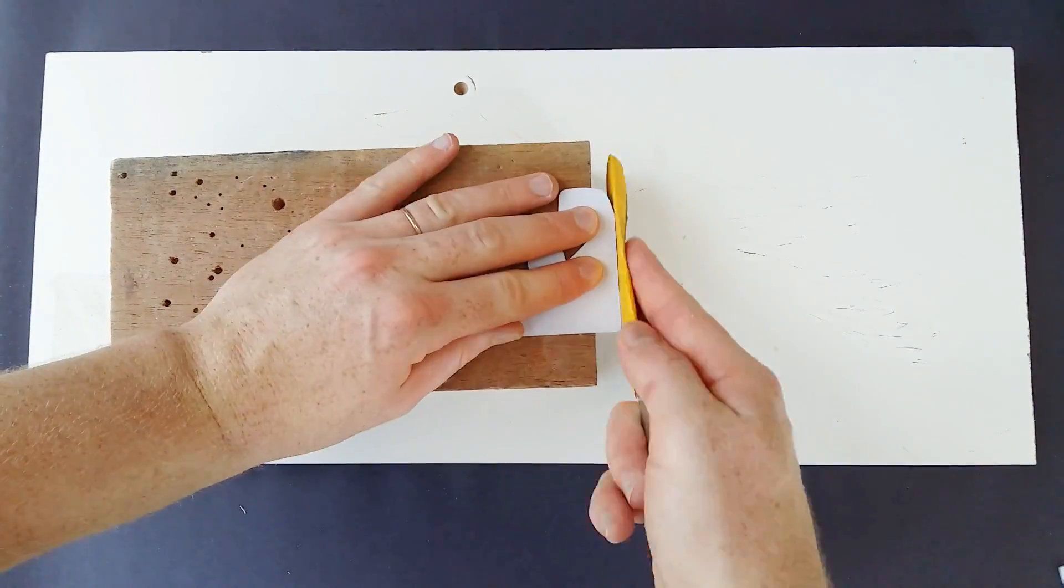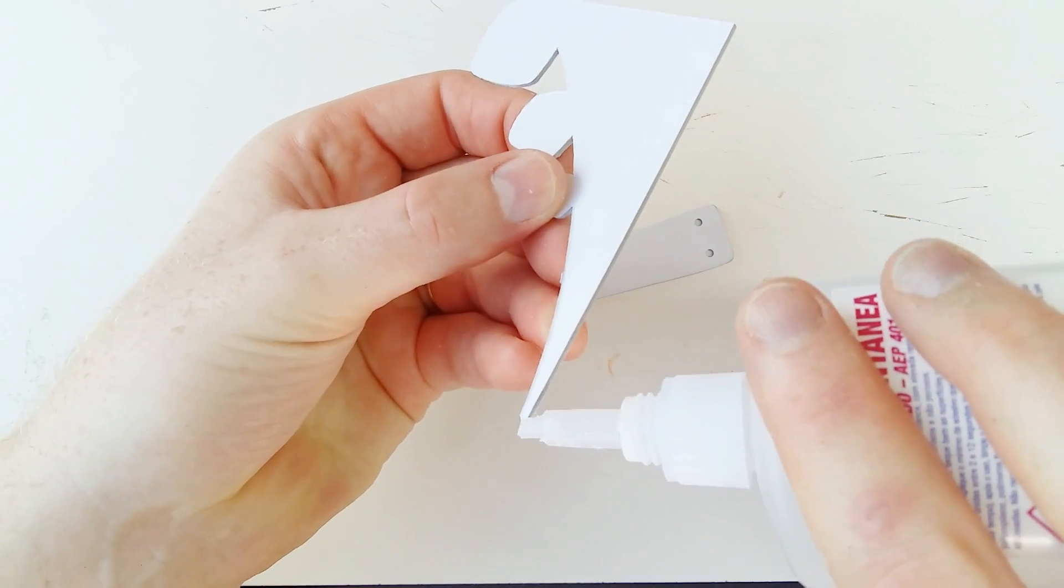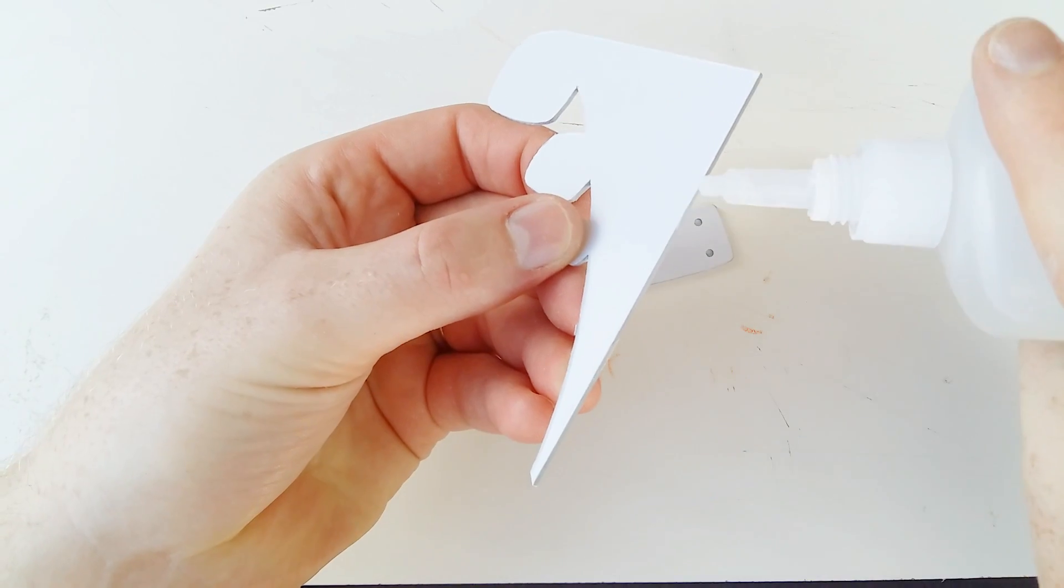The edges are smoothed with sandpaper, and the pieces are joined with instant adhesive.